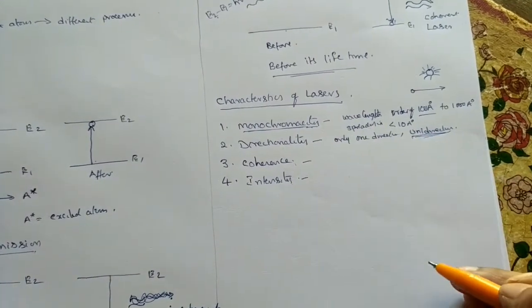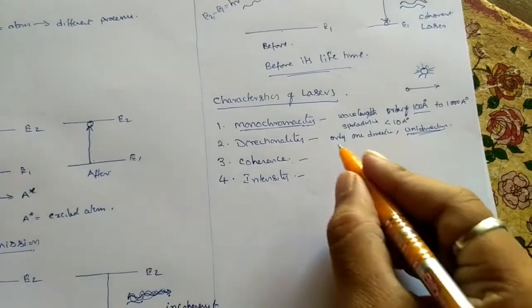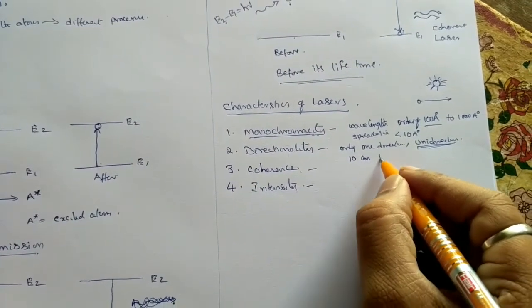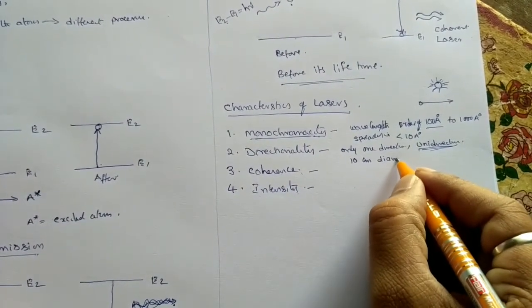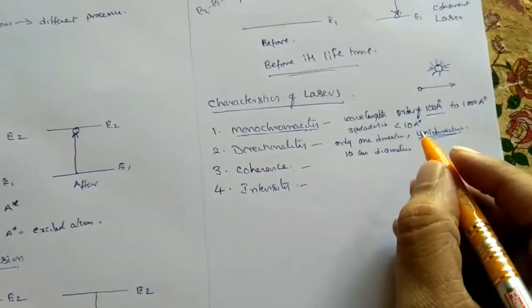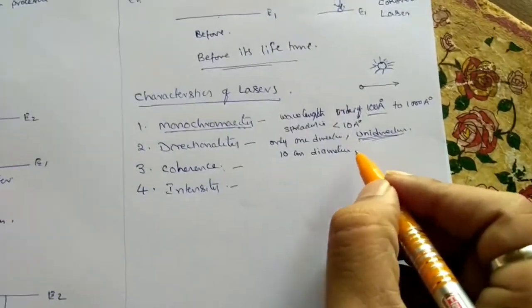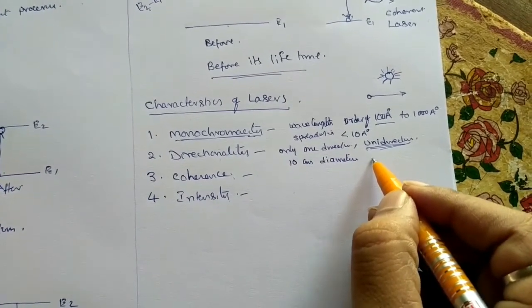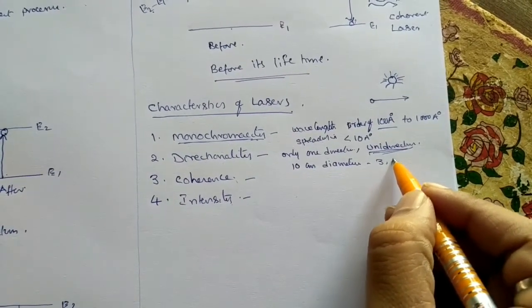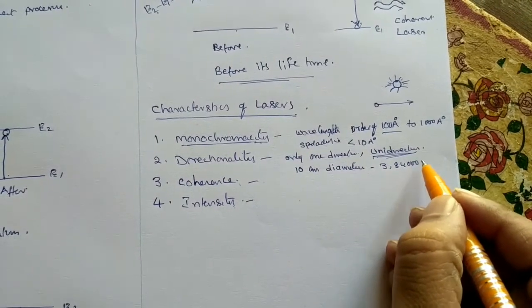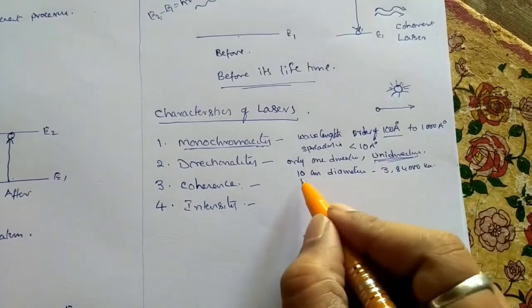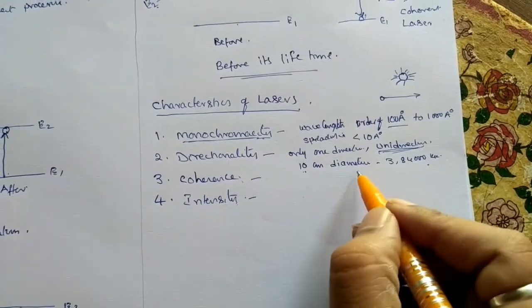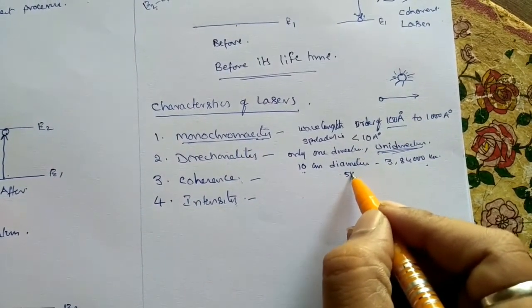The distance between earth and moon is around three lakhs eighty-four thousand kilometers. By traveling this much distance, this laser beam spreads up to only five kilometers of diameter because the spreading is very less.